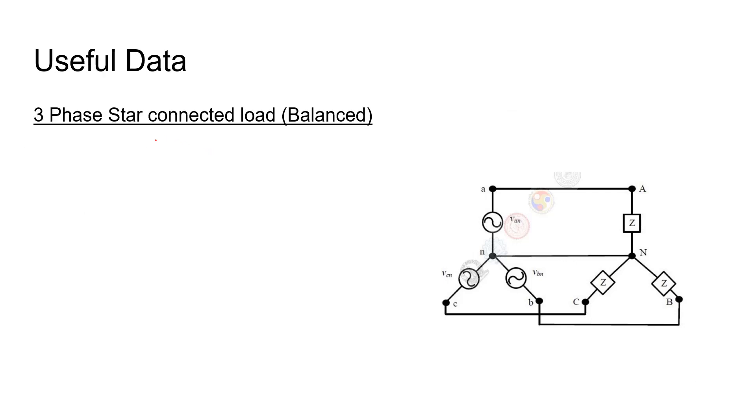Let us first have a look at the basic information required to solve this problem. When we have a three-phase star connected load, the line voltage is equal to root 3 times the phase voltage, and the power is given by 3 times the phase voltage times the phase current times the power factor cos phi. Let us make use of this basic information to solve this problem.